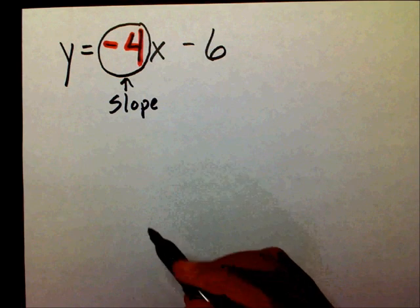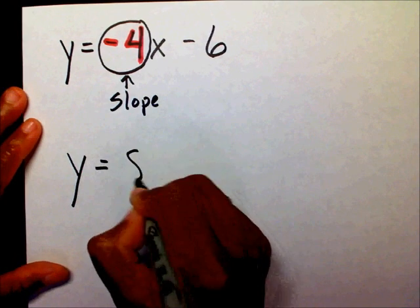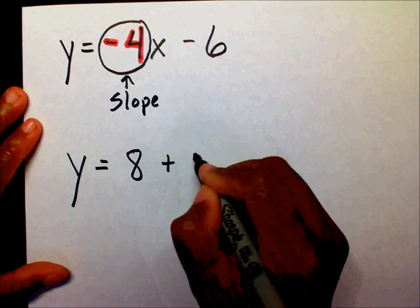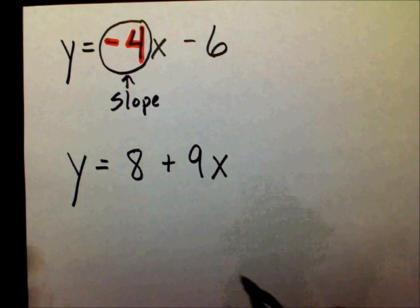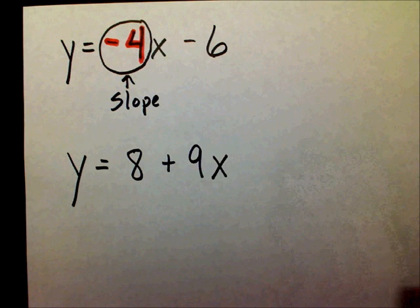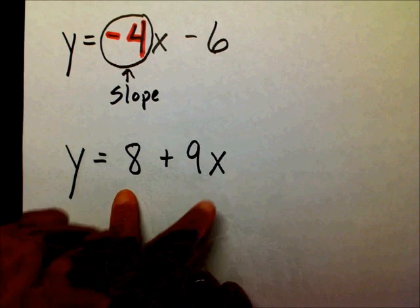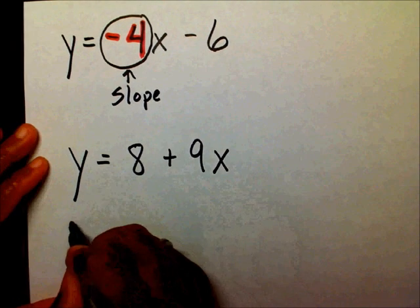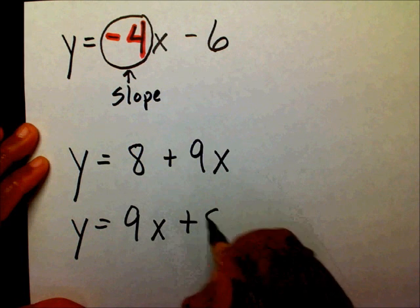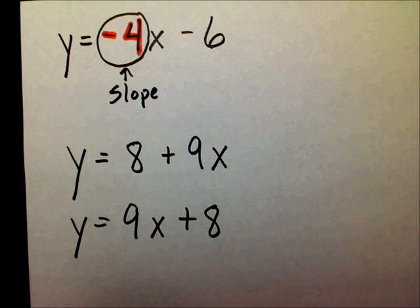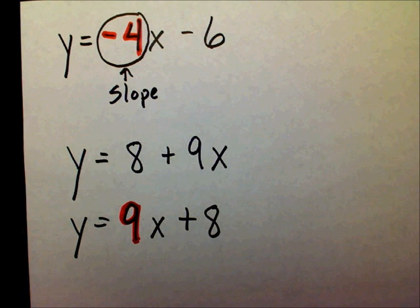If it was written like y equals 8 plus 9x, it's almost in slope-intercept form. The only thing we need to do is switch these two terms and write it as y equals 9x plus 8. Then we can immediately pick out our slope, which is 9.